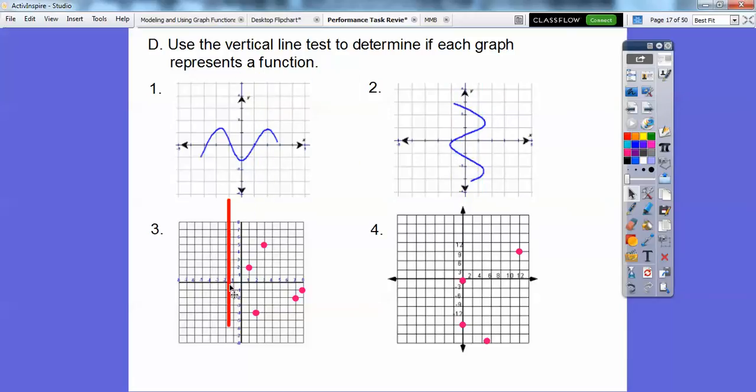This is a yes. This one down here, even though they're points, there's one spot right there. One spot, one spot. Yeah, this one looks like a function right here. On this guy right here, it intersects those two spots right there. This one is not. So it looks like it's going to go yes, no, yes, no right there. So that's how you use that vertical line test.